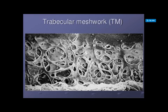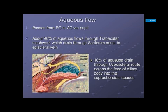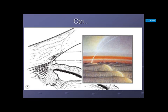This diagram shows the trabecular meshwork. This is the anterior chamber angle showing different structures, which can be viewed during gonioscopy.